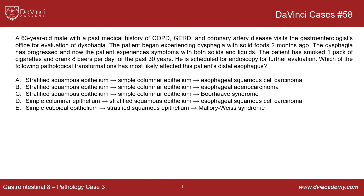So for this case, we've got a 63-year-old male with a past medical history of COPD, GERD, and coronary artery disease that visits the gastroenterologist's office for evaluation of dysphagia. The patient began experiencing dysphagia with solid foods about two months ago, and then the dysphagia has progressed — now the patient experiences symptoms with both solids and liquids. So that's a key point: initially this started two months ago with solid foods, and now it's progressed to both solids and liquids.